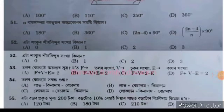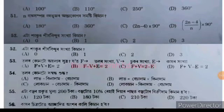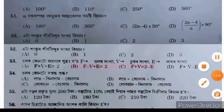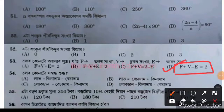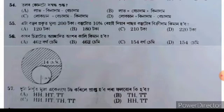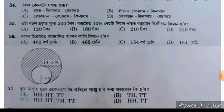Question 53 is about Euler's formula. The options are: A is f + p + e = b, B is f minus p + e minus 2, C is f + p = minus e, and D is f + p minus e equals the area. The correct answer is D: f + p minus e equals 2.